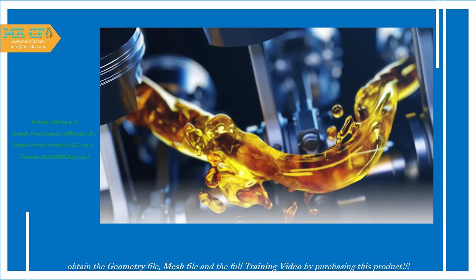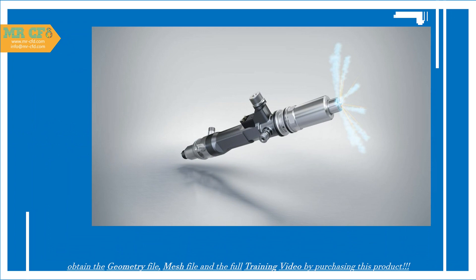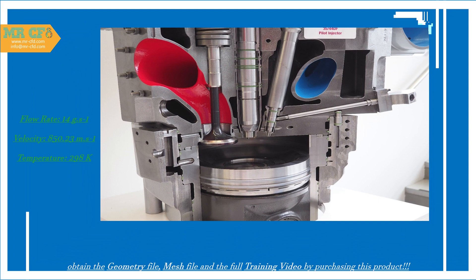The fuel used in this model is diesel, and its properties including density, specific heat capacity, droplet surface tension, and viscosity are specified in the software. An injection process is also defined to set the fuel injection parameters, so the fuel flow is injected into the chamber with an identified flow rate, velocity, and temperature.